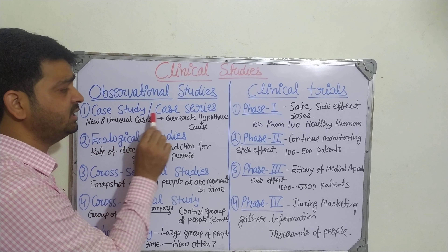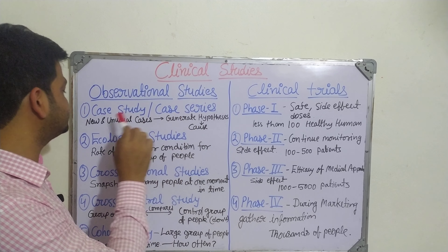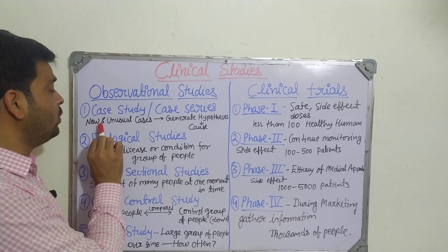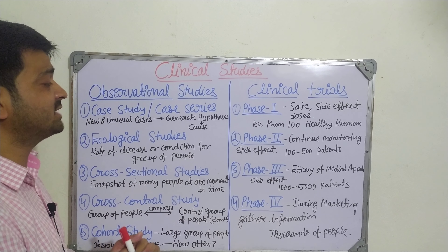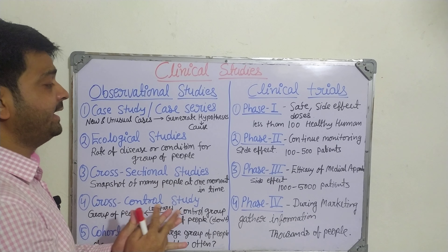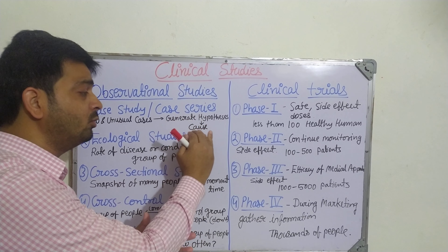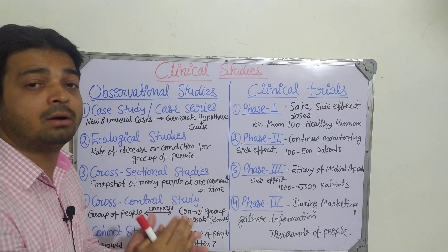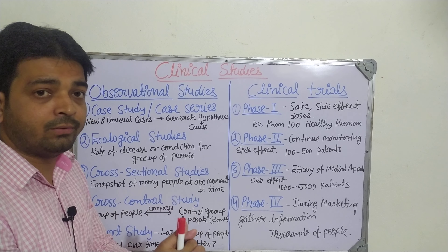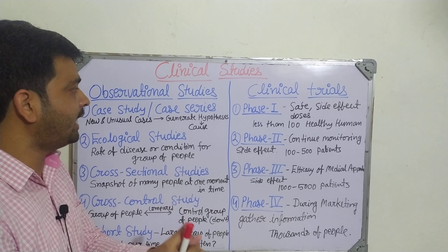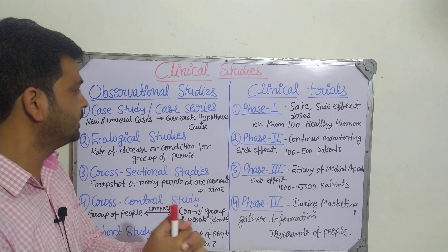Hello students, now we are going to discuss about clinical studies. This is the time to understand what kind of clinical study goes on with a new chemical entity or a new drug. There are basically two types of clinical studies: observational studies and clinical trial studies.